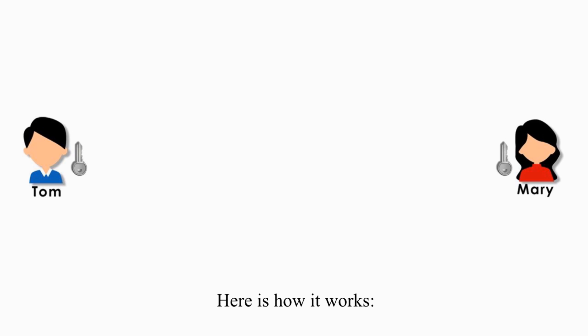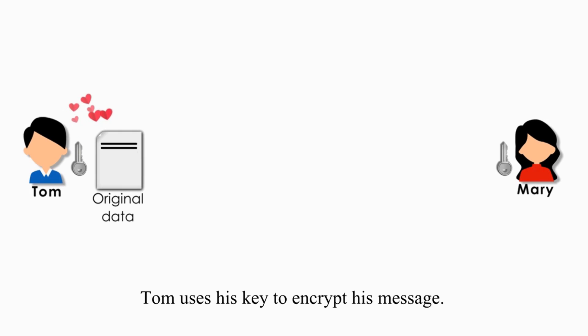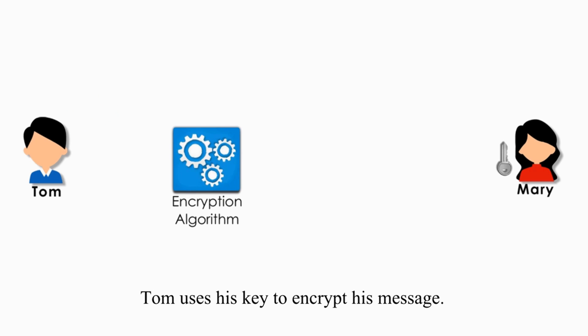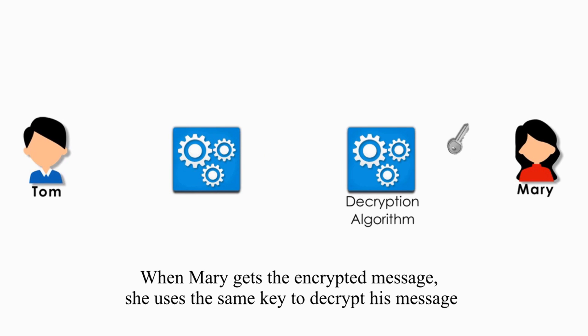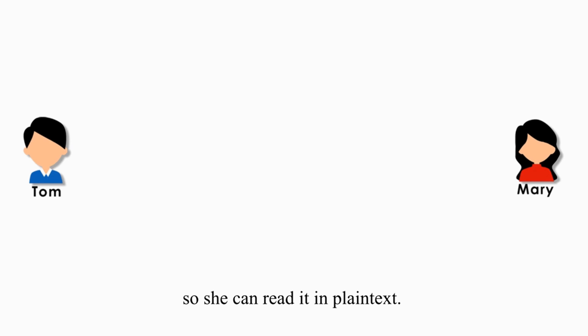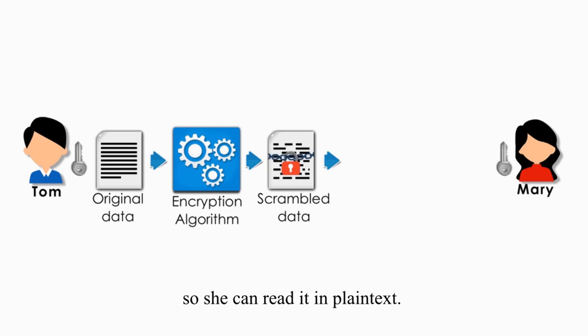Here is how it works. First, Tom uses his key to encrypt his message. Now his message is encrypted to scrambled data. No one can read it. When Mary gets the encrypted message, she uses the same key to decrypt his message, so she can read it in plain text.